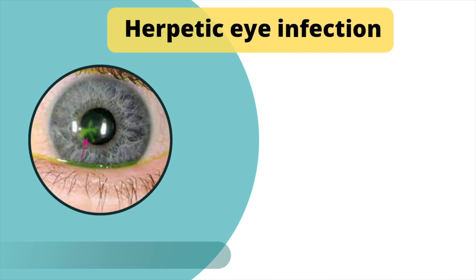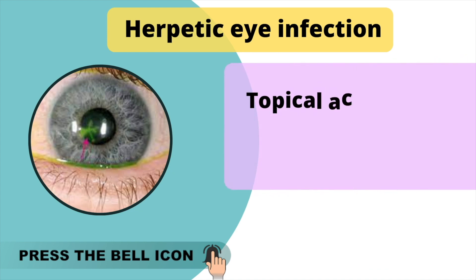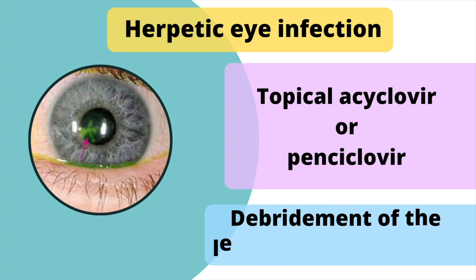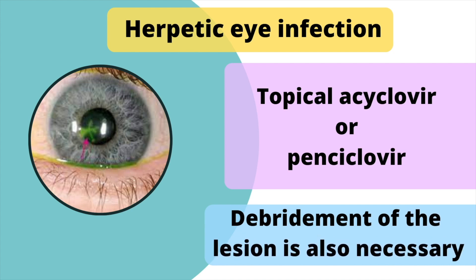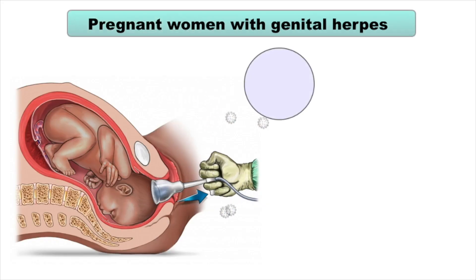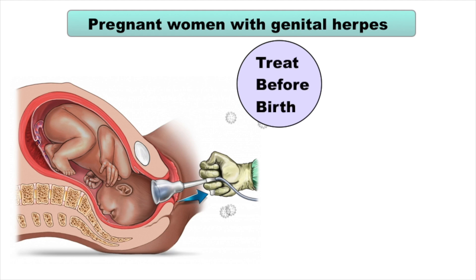Now let's talk about herpetic eye infection. In this situation, topical acyclovir or penciclovir is used, and debridement of the lesion is also necessary. The most crucial step towards healing is having the right diagnosis. In pregnant women suffering from genital herpes, it is extremely important to treat the mother before the birth of the child to prevent transmission of this disease.